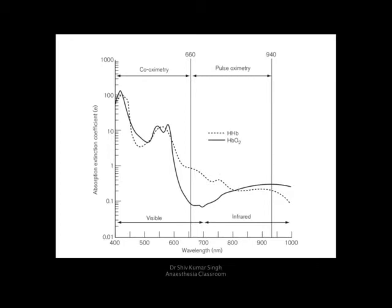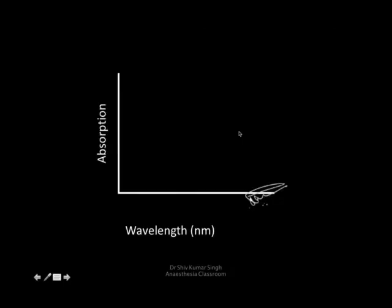Pulse oximeters usually use two wavelengths: 660 nanometers and 940 nanometers, whereas co-oximeters use a range of wavelengths and are able to monitor carboxyhemoglobin and methemoglobin. But with the standard pulse oximetry, we only look at oxygenated hemoglobin and deoxygenated hemoglobin.